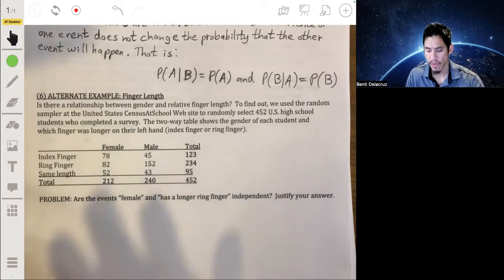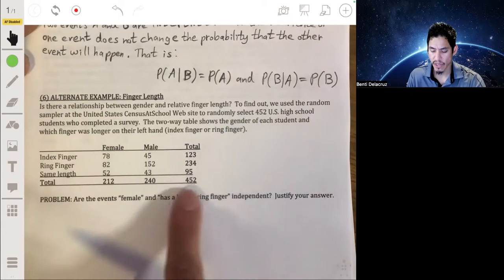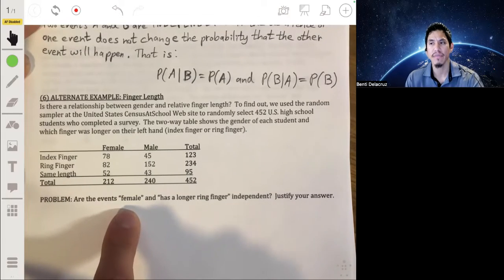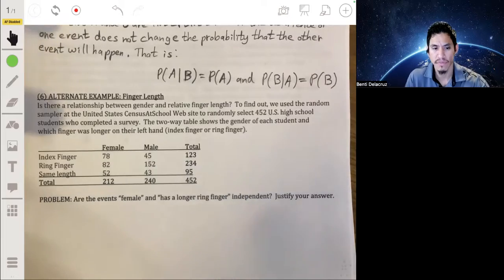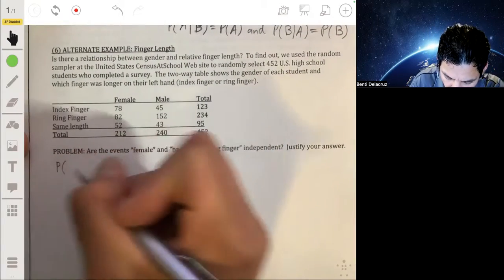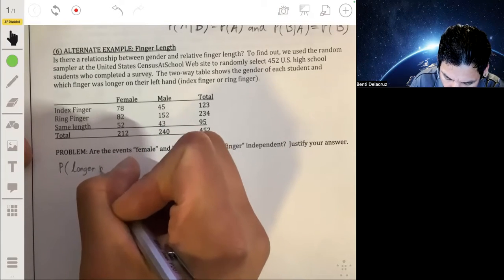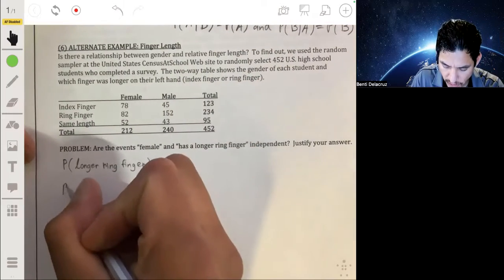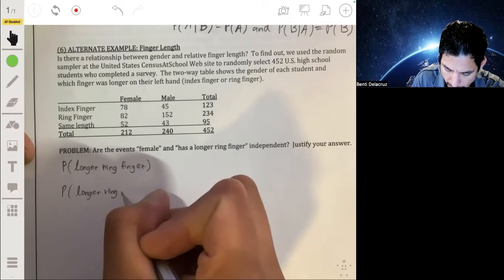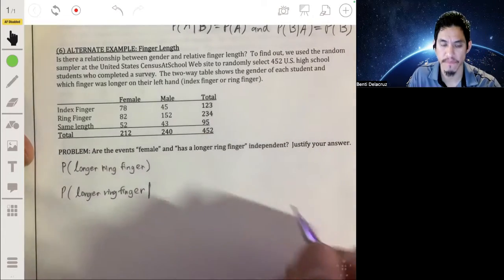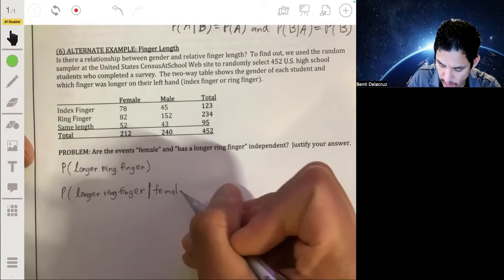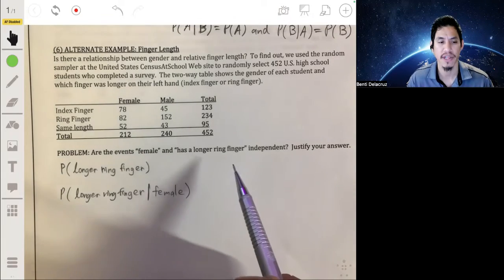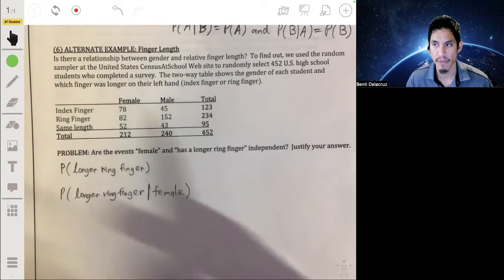So we essentially want to see, does the probability of having a longer ring finger change if you're told that the student is a female? That's really the way you want to look at it. So essentially, you want to figure out what the probability of having a longer ring finger is just in general. No conditions, just the probability of having a longer ring finger. And then we want to compare it. What's the probability of having a longer ring finger given that you're female? So if these two probabilities are the same, then we can say they're independent. If they're not the same, if they're different, then we can say that they're not independent.